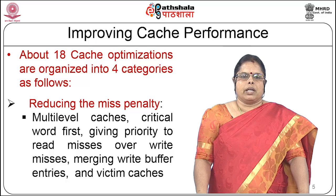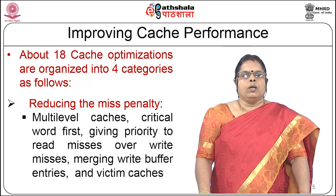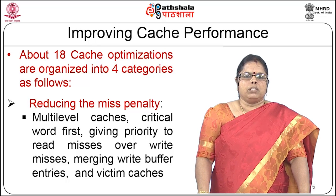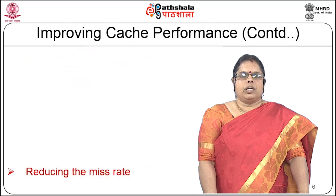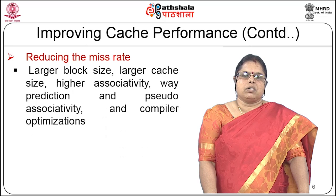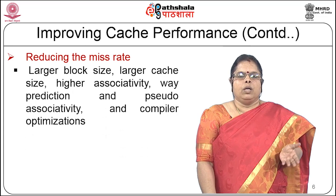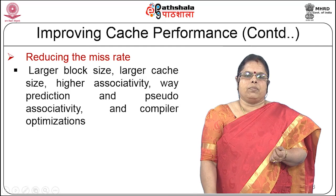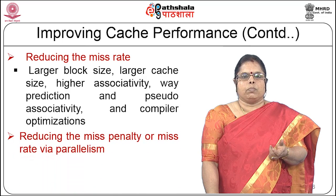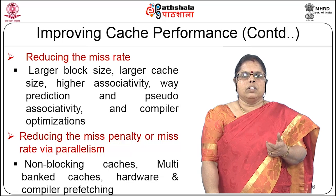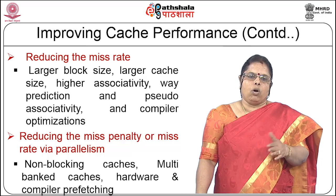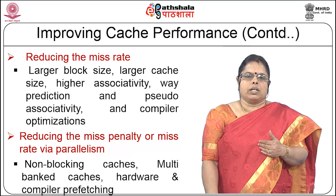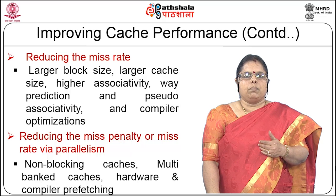Optimization techniques that reduce the miss penalty include multi-level caches, critical word first, giving priority to read misses over write misses, merging write buffer entries, and victim caches. Techniques to reduce the miss rate include effects of larger block size, larger cache size, higher associativity, way prediction and pseudo-associativity, and compiler optimizations. Techniques that reduce miss penalty or miss rate via parallelism include non-blocking caches, multi-banked caches, hardware prefetching, and compiler-based prefetching.